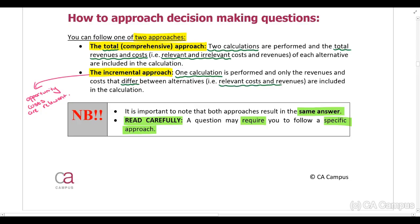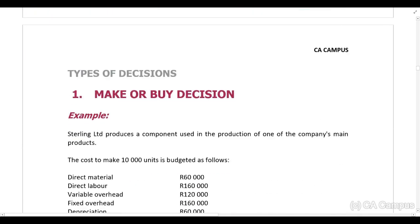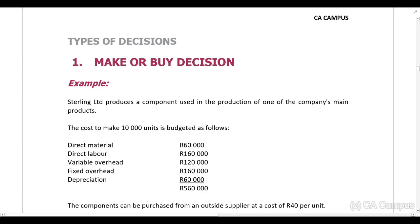The first type of decision we are going to consider is the make-or-buy decision, which can also be referred to as an outsourcing decision — should the company make the product themselves or should they outsource production and buy the product from somebody else?